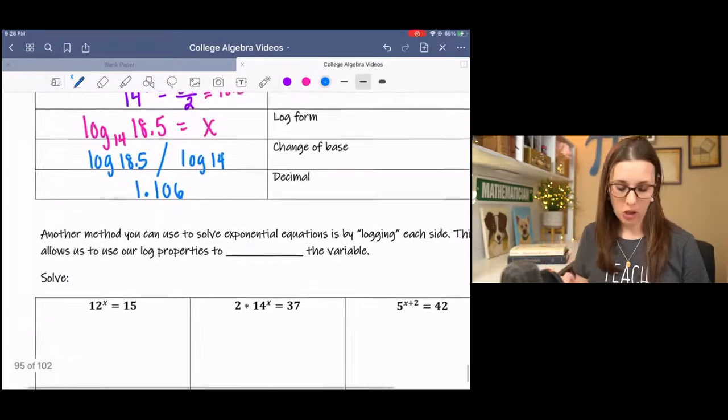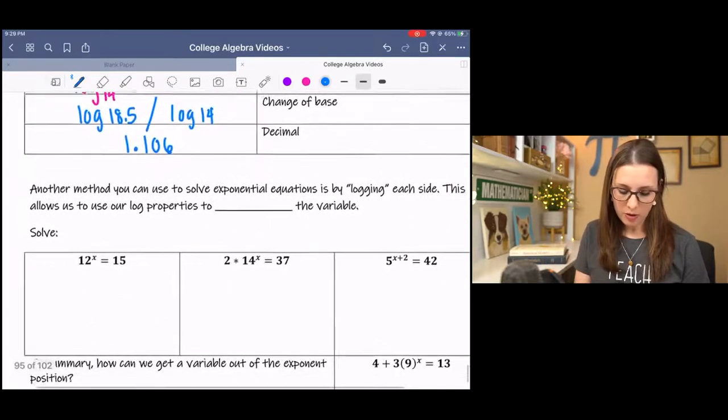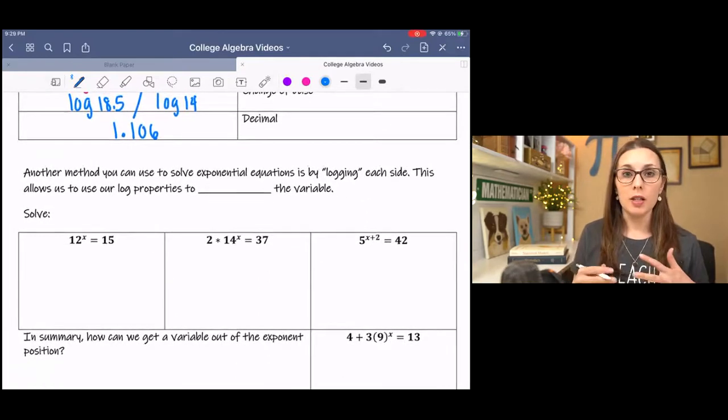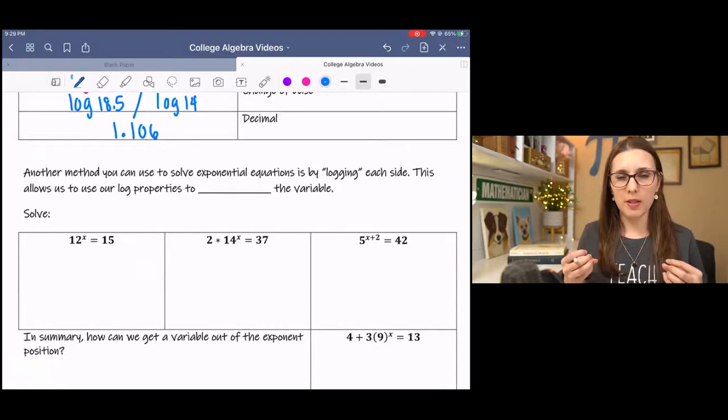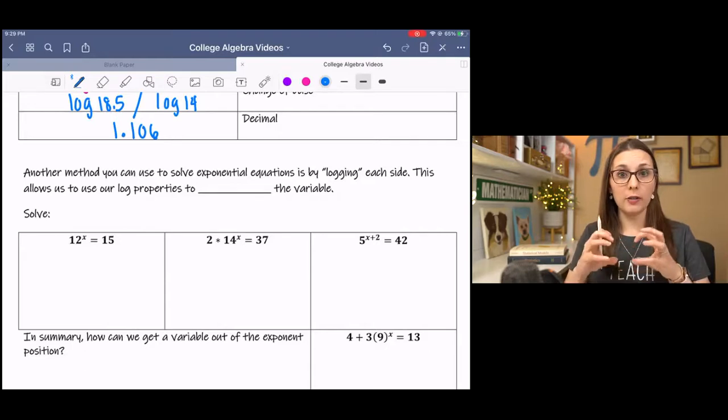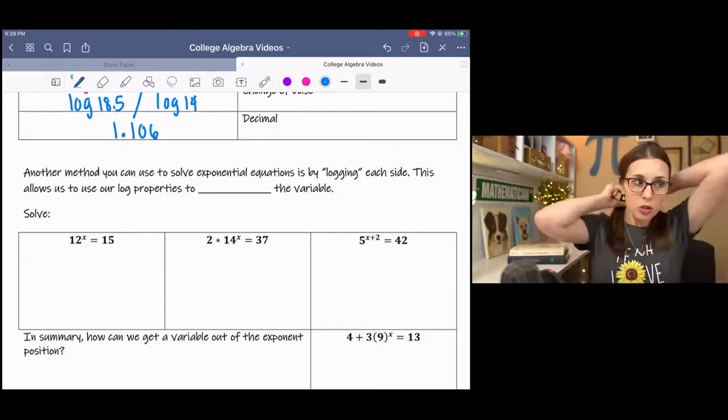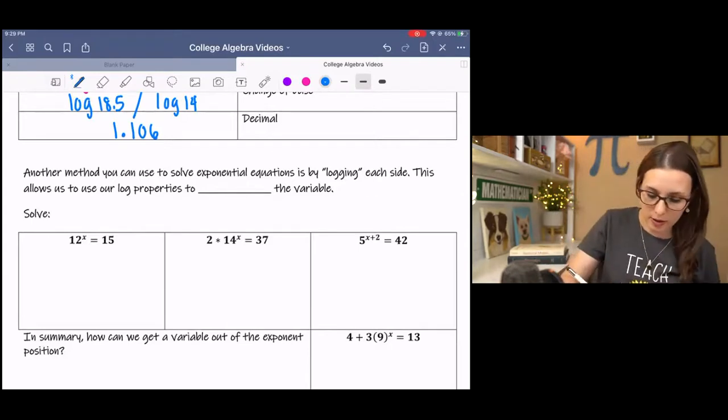The only new thing really was the change of base. There's another method you can use to solve exponential equations. And it's by logging each side. And so we're kind of using this inverse operation to undo some stuff. And basically what's happening when we're undoing is we're using our properties of logs to kind of unpack it, break it apart. So this allows us to use log properties to isolate the variable.